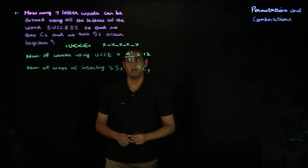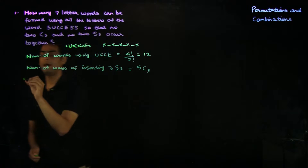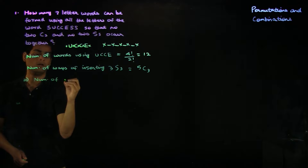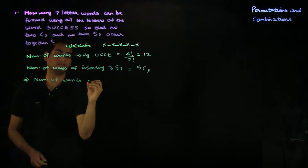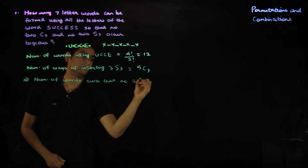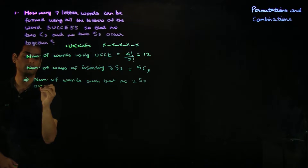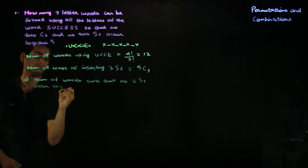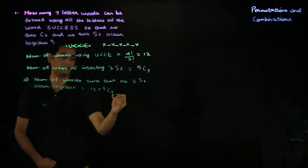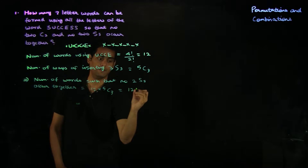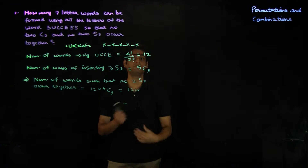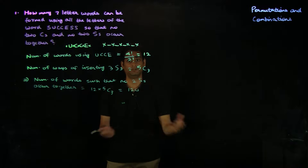The number of ways of inserting the three S's is just five choose three ways — you just choose three of the five spots. This implies that the number of words such that no two S's occur together is 12 times 5C3. Since 5C3 is 10, this gives you 120. However, some of these 120 words could contain two C's which are together.